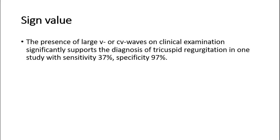For its sign value, the presence of large V- or CV-waves on clinical examination significantly supports the diagnosis of tricuspid regurgitation, with sensitivity 37% and specificity 97%. That's all for this video. Thank you.